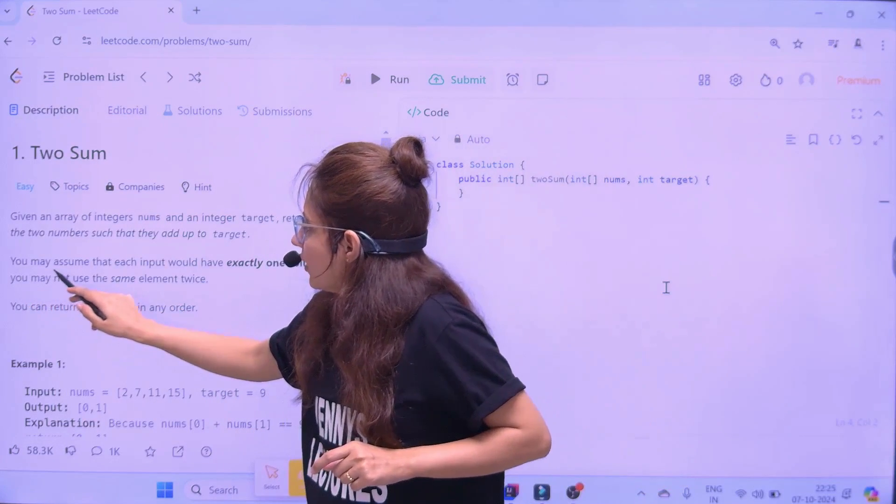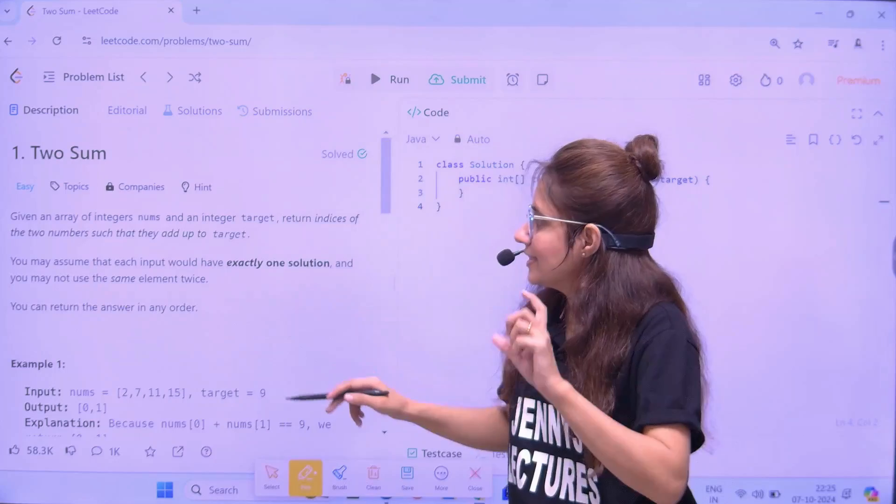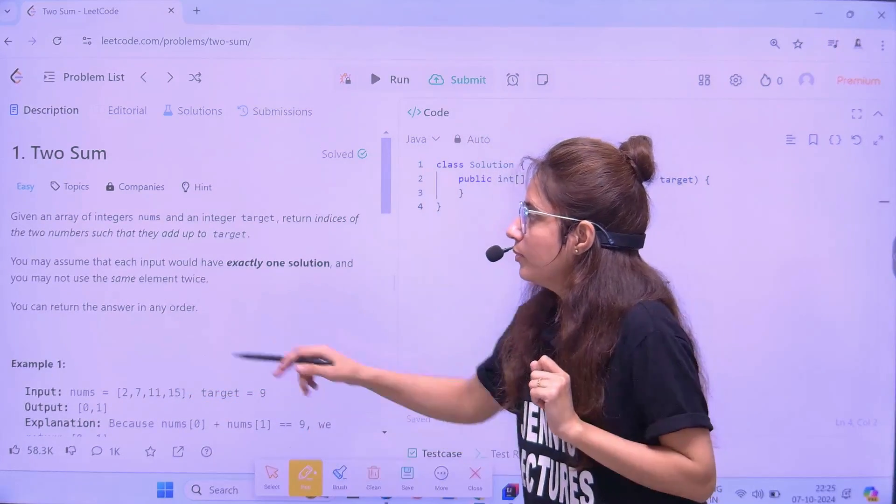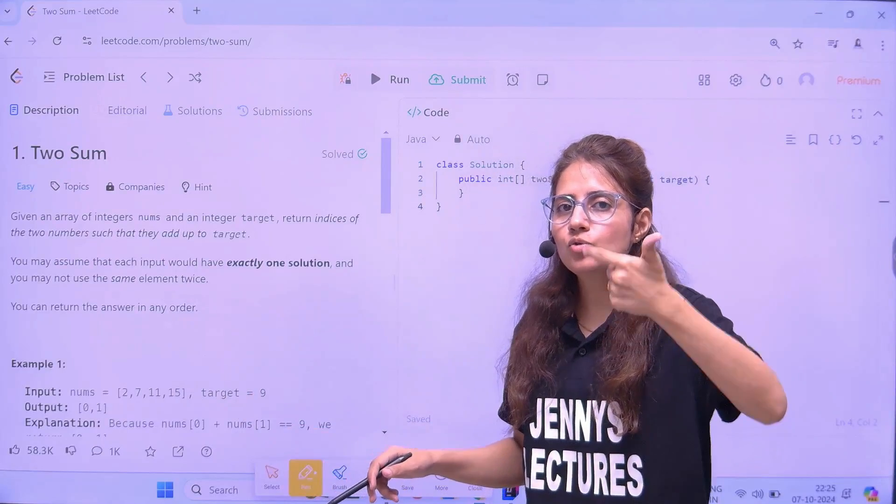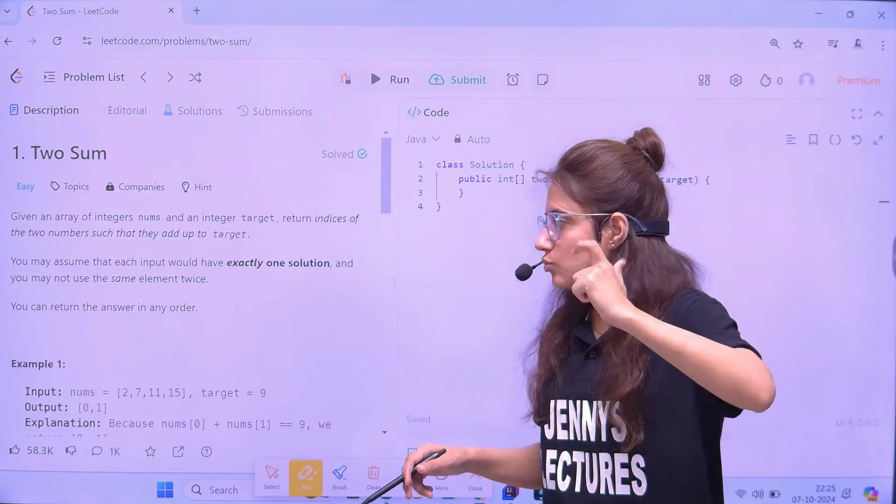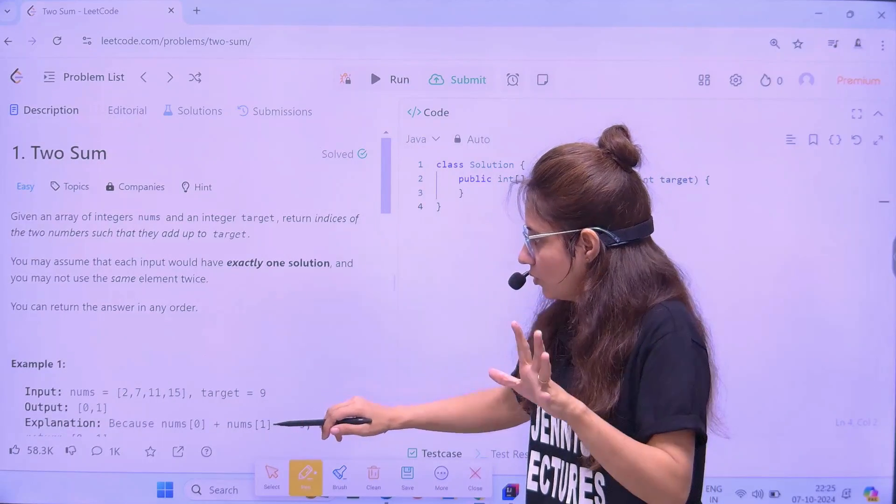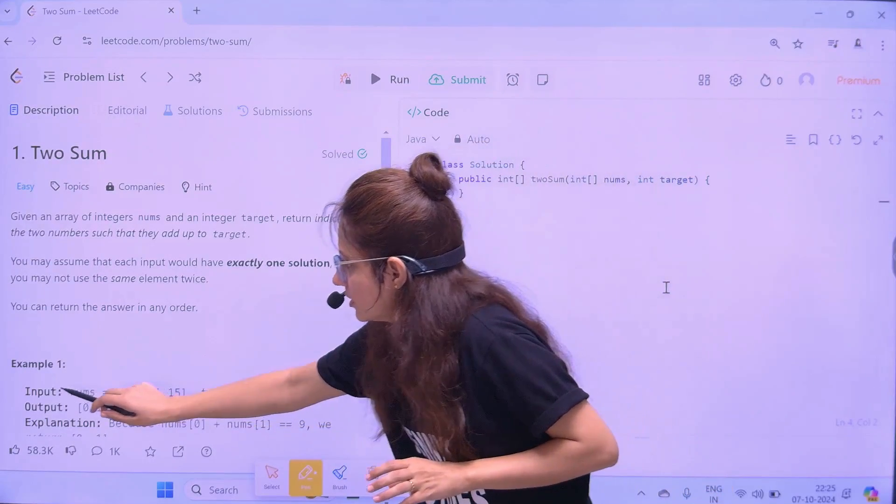What you have to do is, examples are given also, I will show you those examples as well. Now, you may assume that each input would have exactly one solution. And you may not use the same element twice. One element you can use once. You can return the answer in any order.